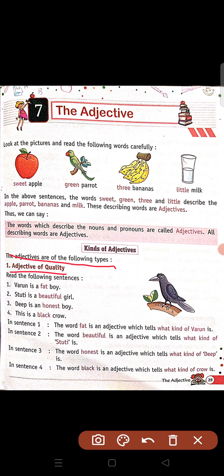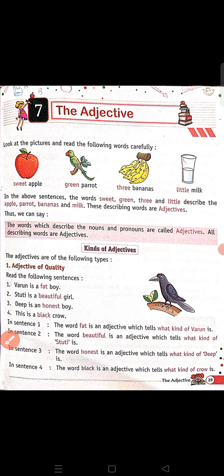Fat batata hai ki Varun kaisa hai — fat hai, moata hai. Second sentence mein word beautiful hai — beautiful batata hai ki Stuthi kaisi hai, beautiful hai. Third word honest — honest batata hai ki Deep ka nature kaisa hai, honest hai. Fourth sentence mein black word batata hai ki crow kaisa hai — black color ka hota hai.